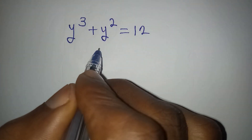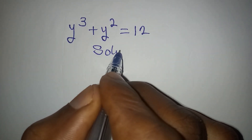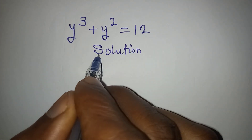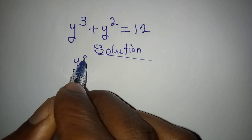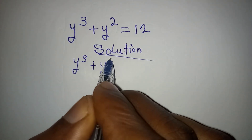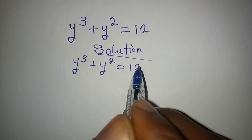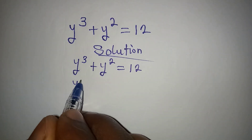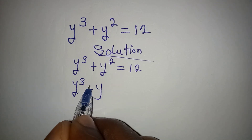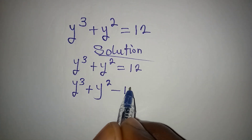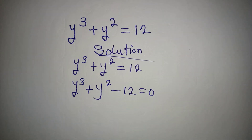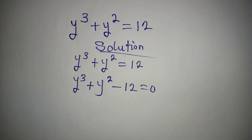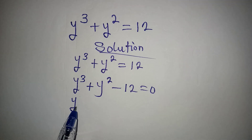Hello everyone. Let's provide a solution to this problem: y to the power of 3 plus y to the power of 2 equals 12. We are going to provide a complete solution. From here we have y to the power of 3 plus y to the power of 2 minus 12 equals 0. What I've done is brought 12 to the left hand side.